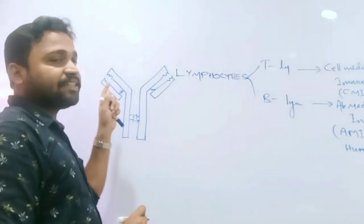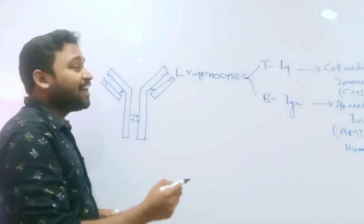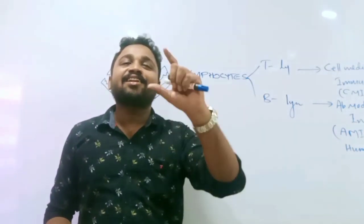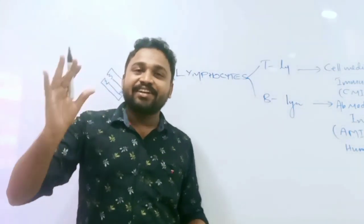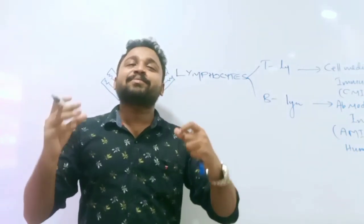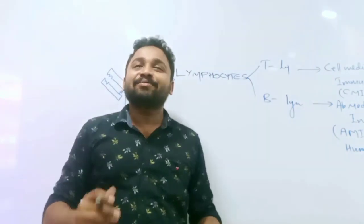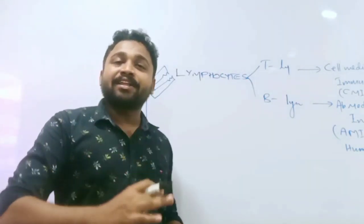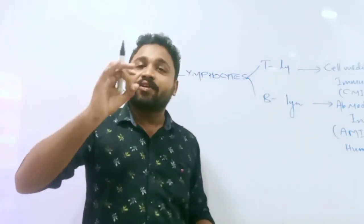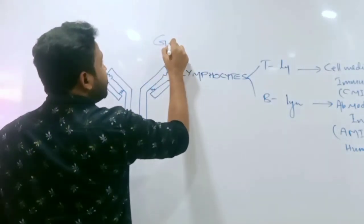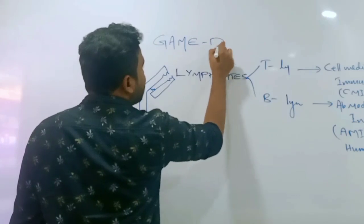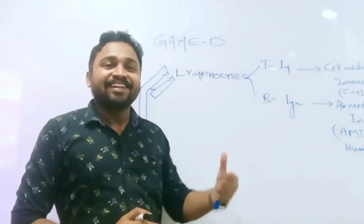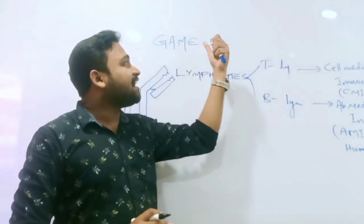Antibody is immunoglobulin. If we study this antibody, we have a code. The five classes are: IgG, IgA, IgM, IgE, and IgD. These are the five types of immunoglobulins.